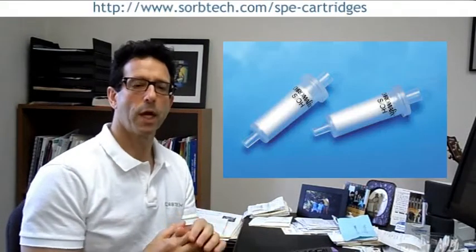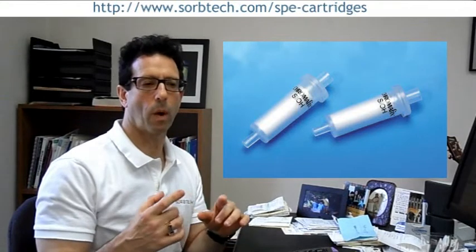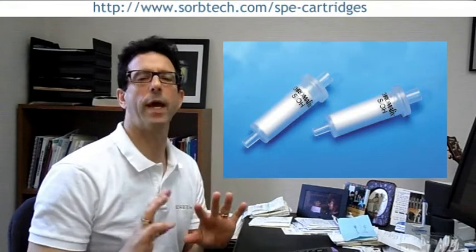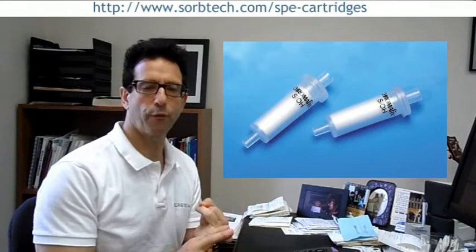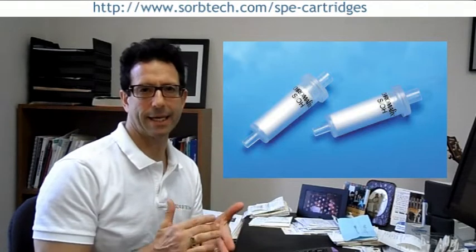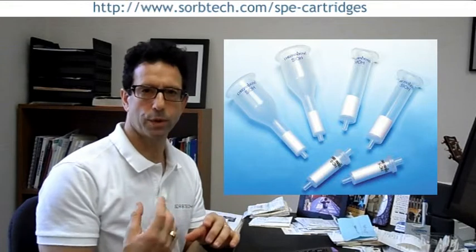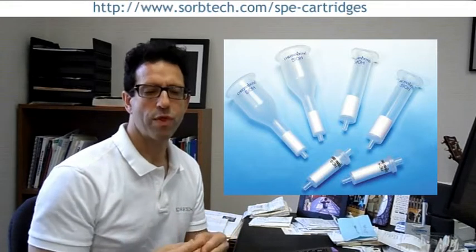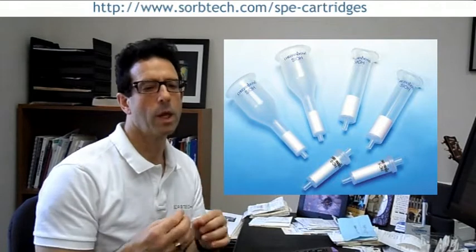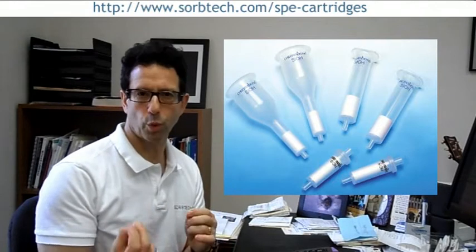Another low-cost way to do method development is using SPE cartridges. Our SPE cartridges are packed with every phase imaginable — C2, C4, C8, C18, amino, phenyl, diol, SCX, SAX — all available in an easy-to-use cartridge style. You load a small amount of sample to find out which resin is going to work best for you.